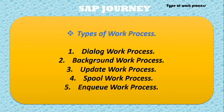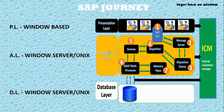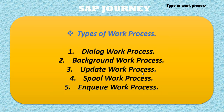Now, what is an ABAP work process? There are five types of work processes: first is the dialogue work process, second is the background work process, third is the update work process, fourth is the spool work process, and fifth is the enqueue work process.